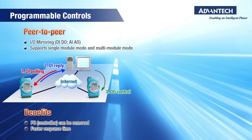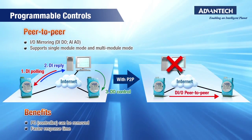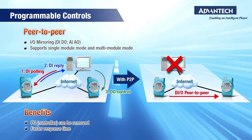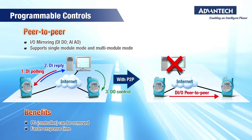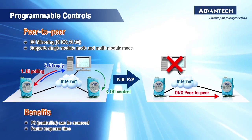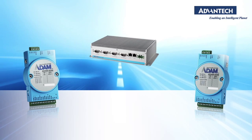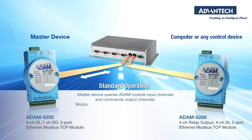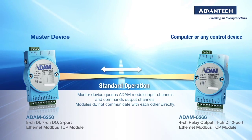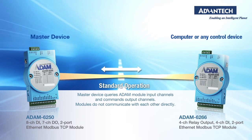Typical remote I/O requires a host or master to poll the various modules. But the peer-to-peer, or P2P, feature allows the Atom6200 and 6000 families to communicate directly with each other, eliminating the need for expensive master hardware when it's unnecessary. Peer-to-peer allows an input on one module to directly actuate the output of another module.